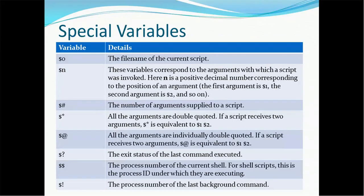Dollar asterisk represents all the arguments double-quoted — if a script receives two arguments, dollar asterisk is equivalent to dollar one and dollar two. Dollar at symbol works the same as dollar asterisk; if a script receives two arguments, dollar at is equivalent to dollar one and dollar two. Dollar question mark gives the exit status of the last command executed. Dollar dollar gives the process number of the current shell — for a shell script, this is the process ID under which it is executing. Dollar exclamation mark gives the process number of the last background command.